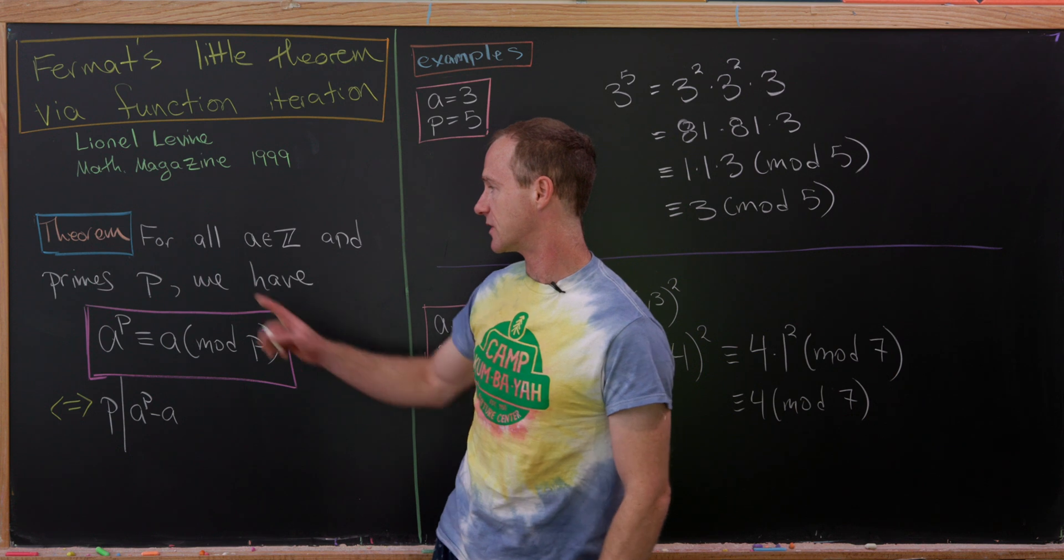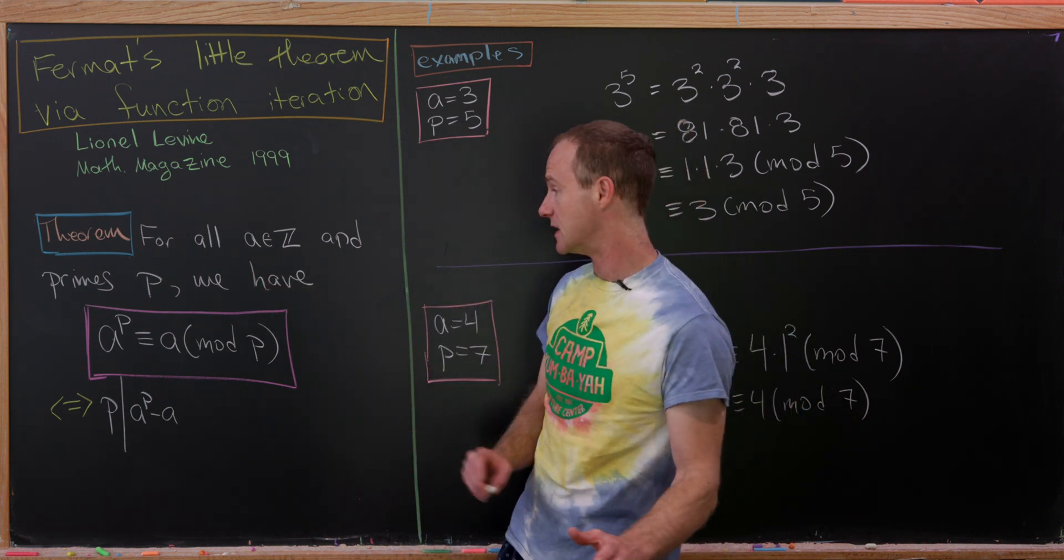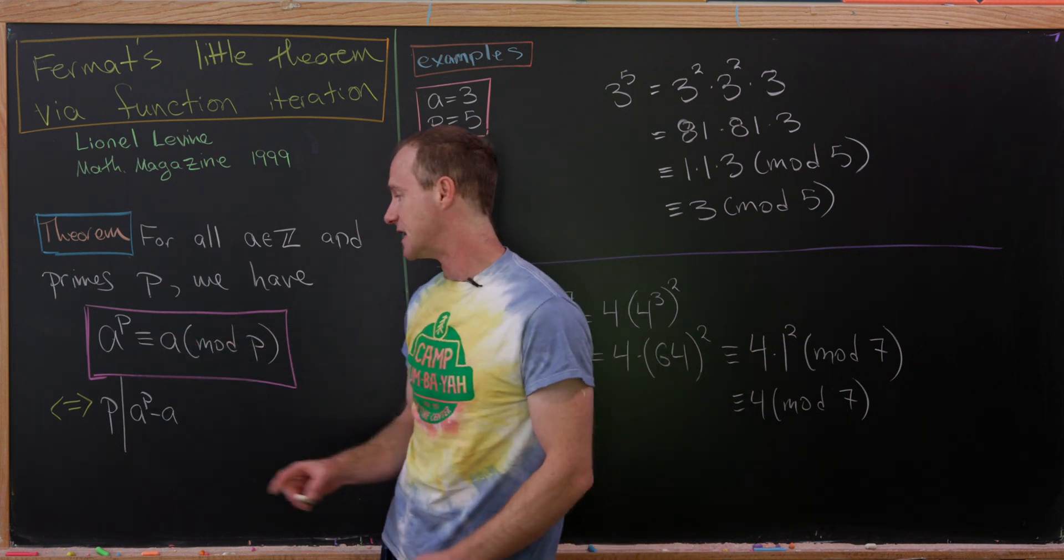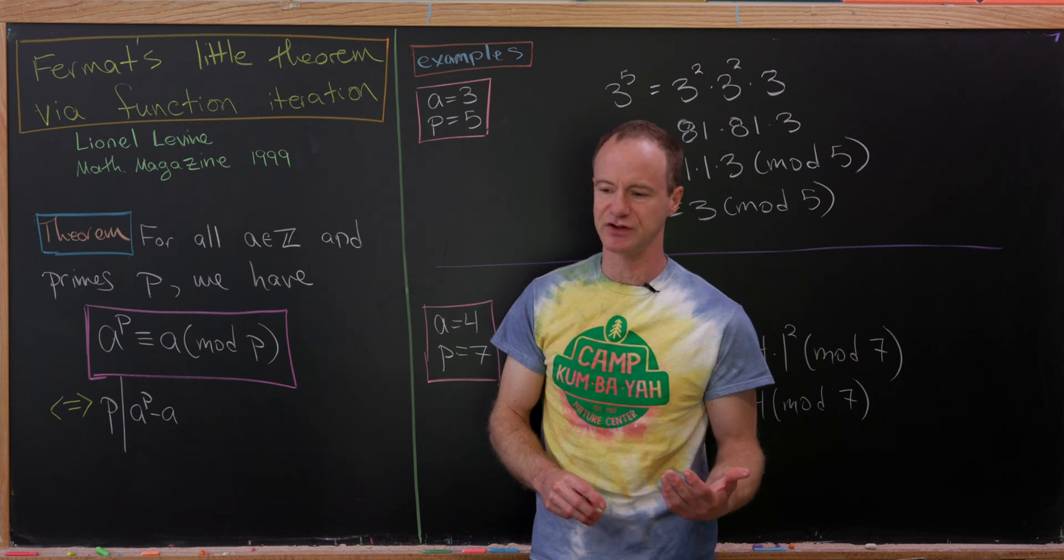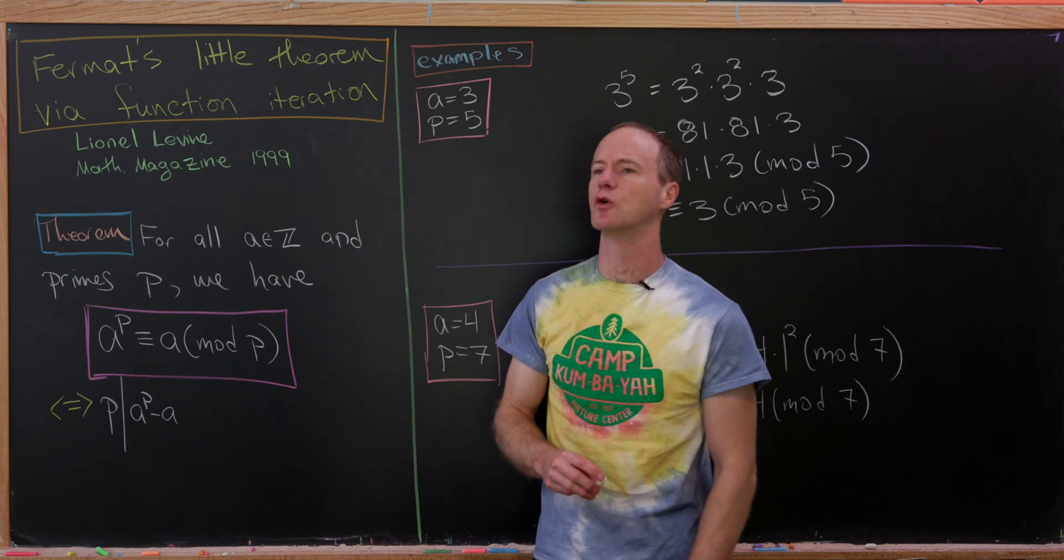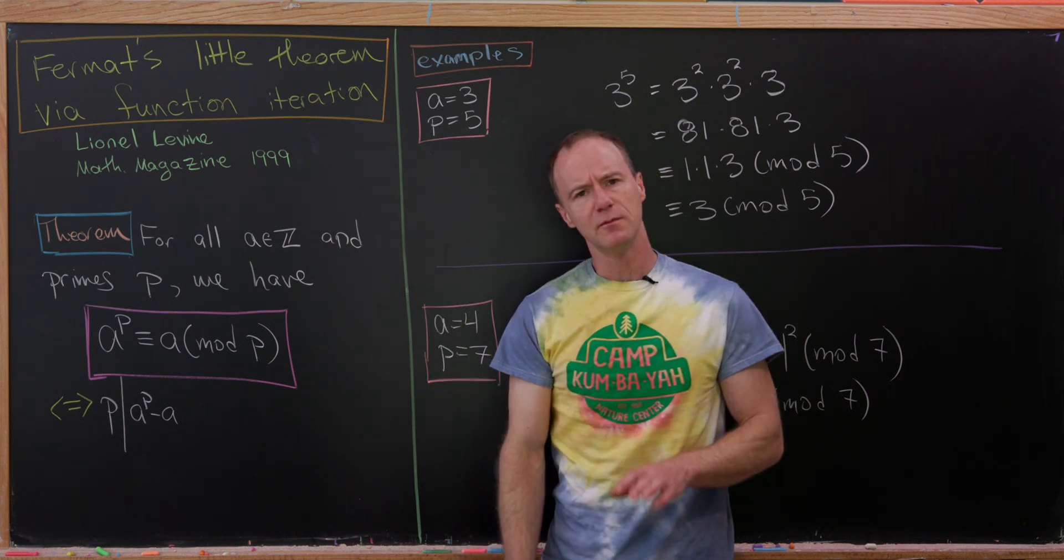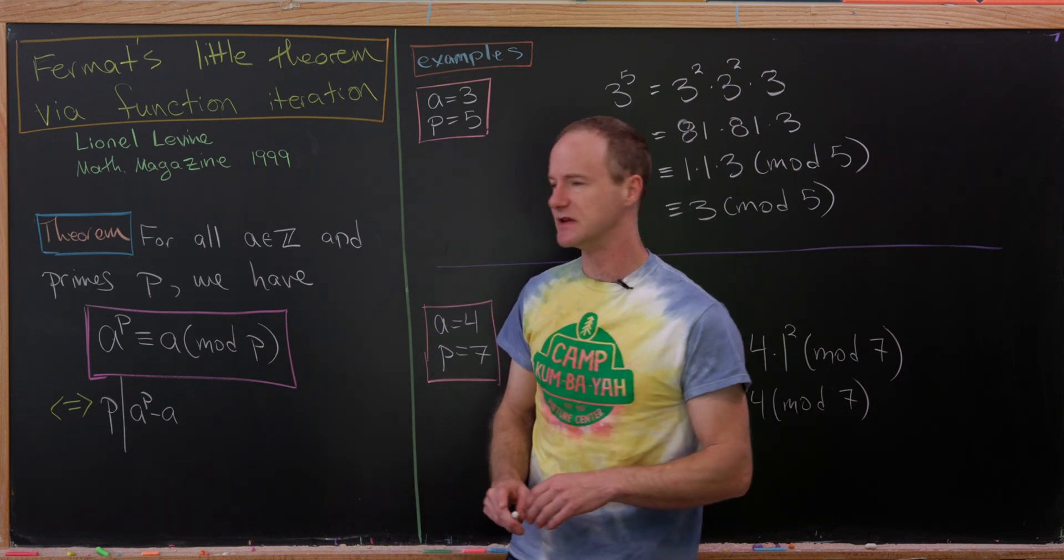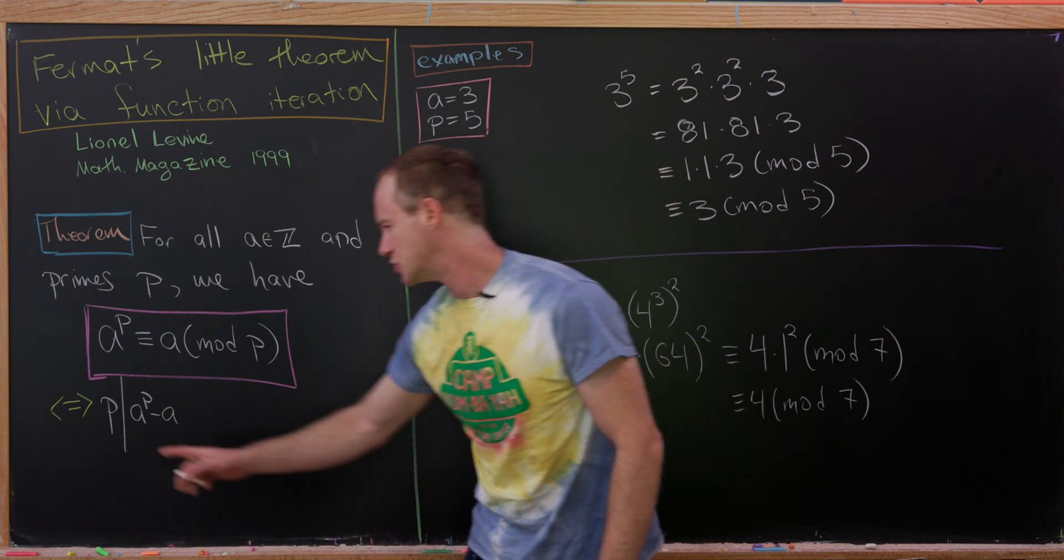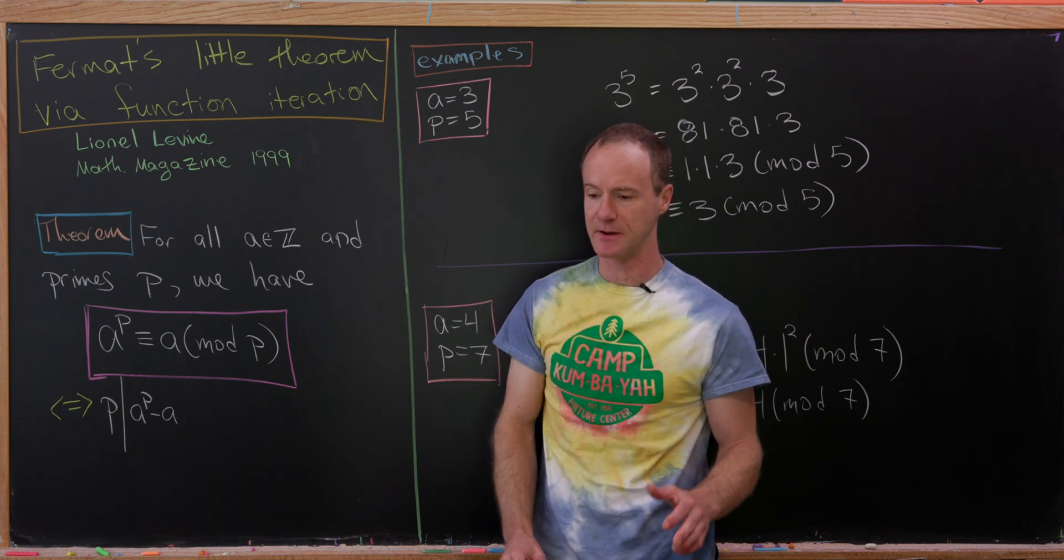So Fermat's Little Theorem says for all integers a and primes p, we have a to the p is congruent to a mod p. So this might be a slightly different version than you're used to, but this is equivalent to the maybe more standard version. But let's notice that being congruent mod p is equivalent to p dividing a to the p minus a.